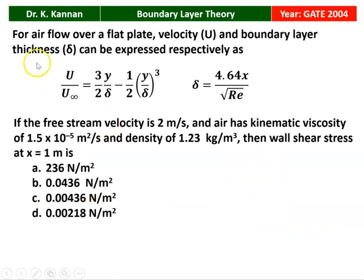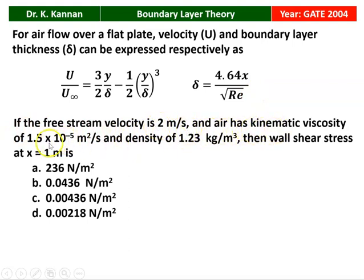The next question is from the GATE 2004 question paper. For air flow over a flat plate, velocity u and boundary layer thickness delta can be expressed respectively as: u divided by U-infinity equals (3/2)(y/delta) minus (1/2)(y/delta)^3, where delta equals 4.64x divided by the square root of the Reynolds number. If the free stream velocity is 2 meters per second, kinematic viscosity is 1.5 × 10^-5 m²/s, and density is 1.23 kg/m³, the wall shear stress at x equal to 1 meter is 0.00436 N/m².